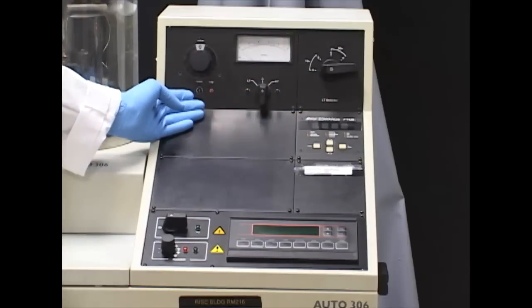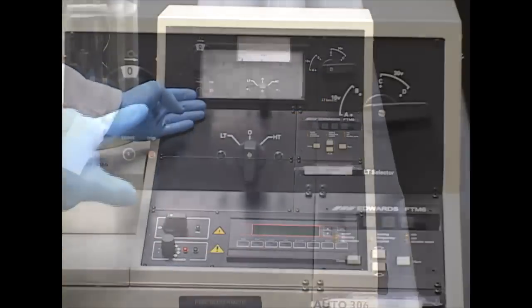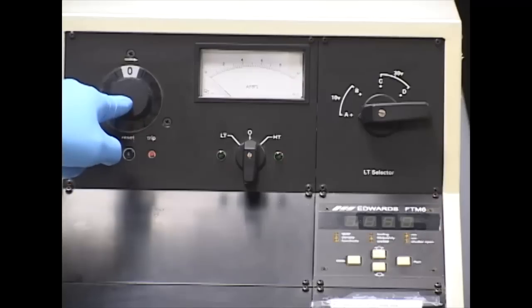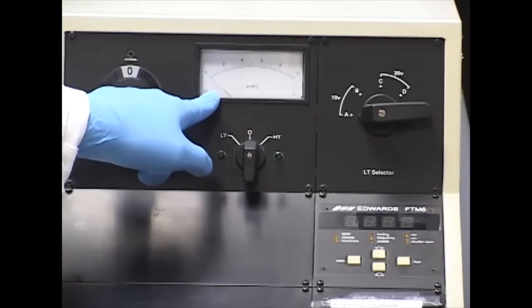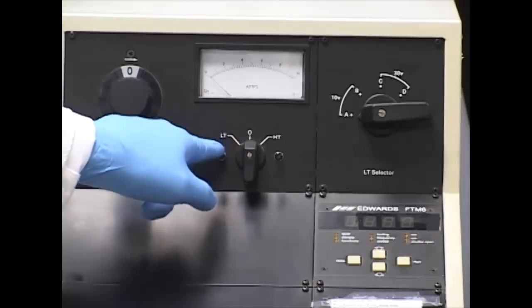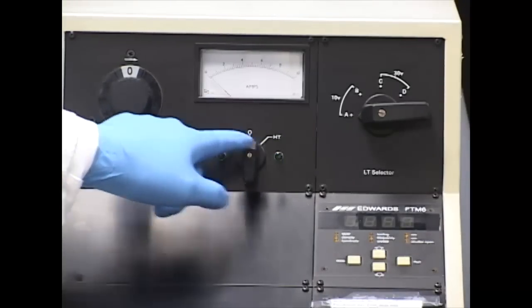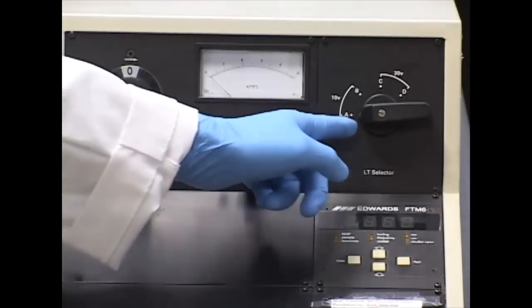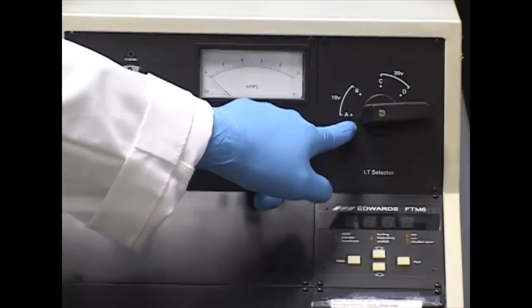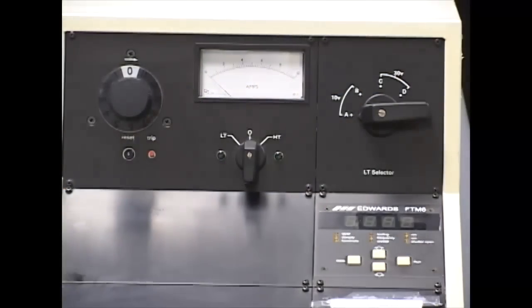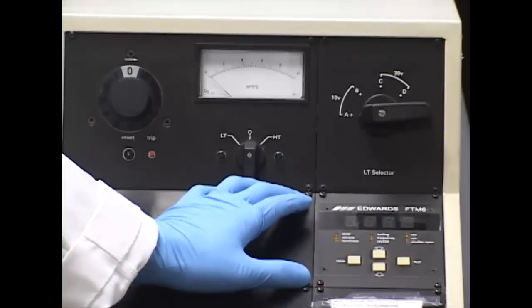Here we have the electronic part that is required to melt the material onto the substrate. This knob is to control the current flow. This is to visually see the amps. This controls which side we're using, if it's the LT or the HT. This knob is to control which of the four stations we use. Currently we're going to use station number A. And here we have our thickness monitor sector.